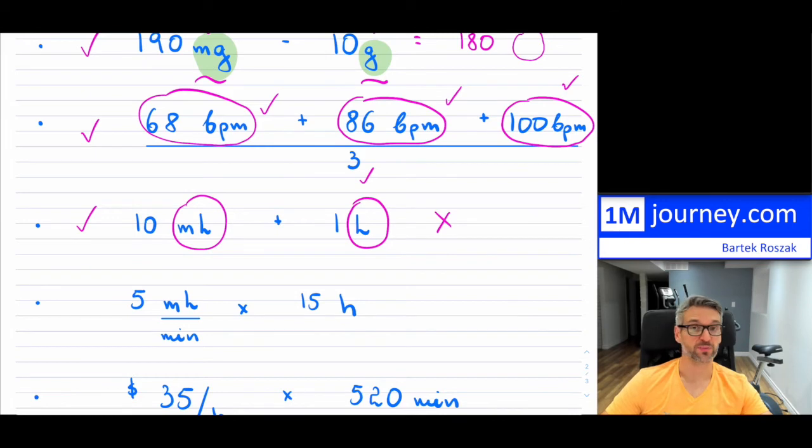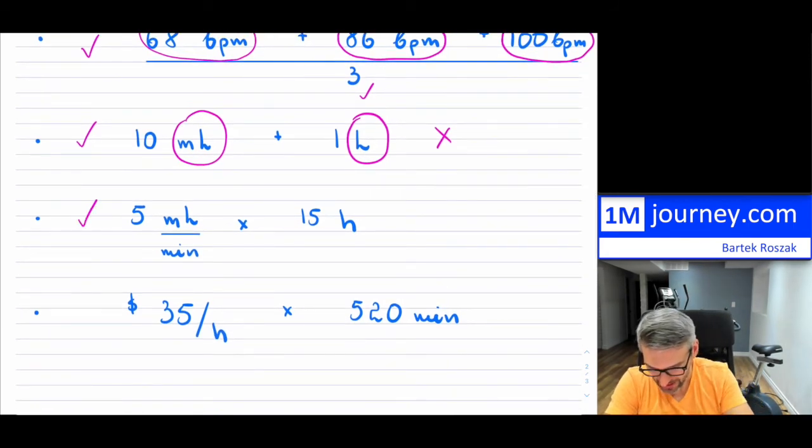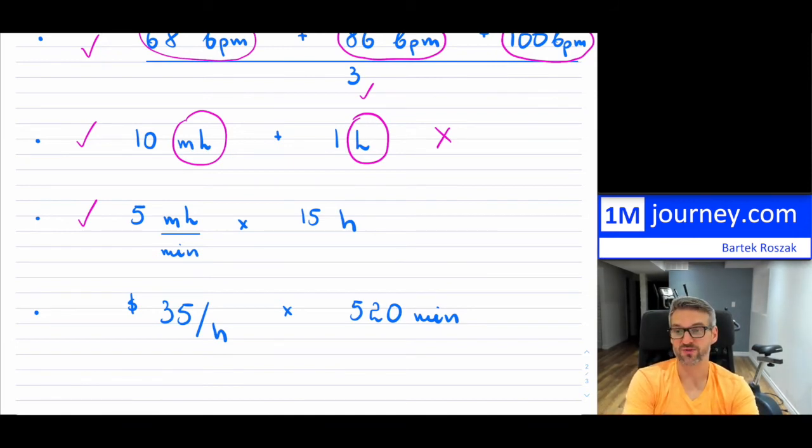So we have to be careful and we're going to have to convert this back. So in your word problems, watch out and make sure that when you have a quantity, that you're being consistent in the units throughout. Here are a couple of other examples. So here's, for example, a multiplication. So it says five milliliters per minute multiplied by 15 hours.